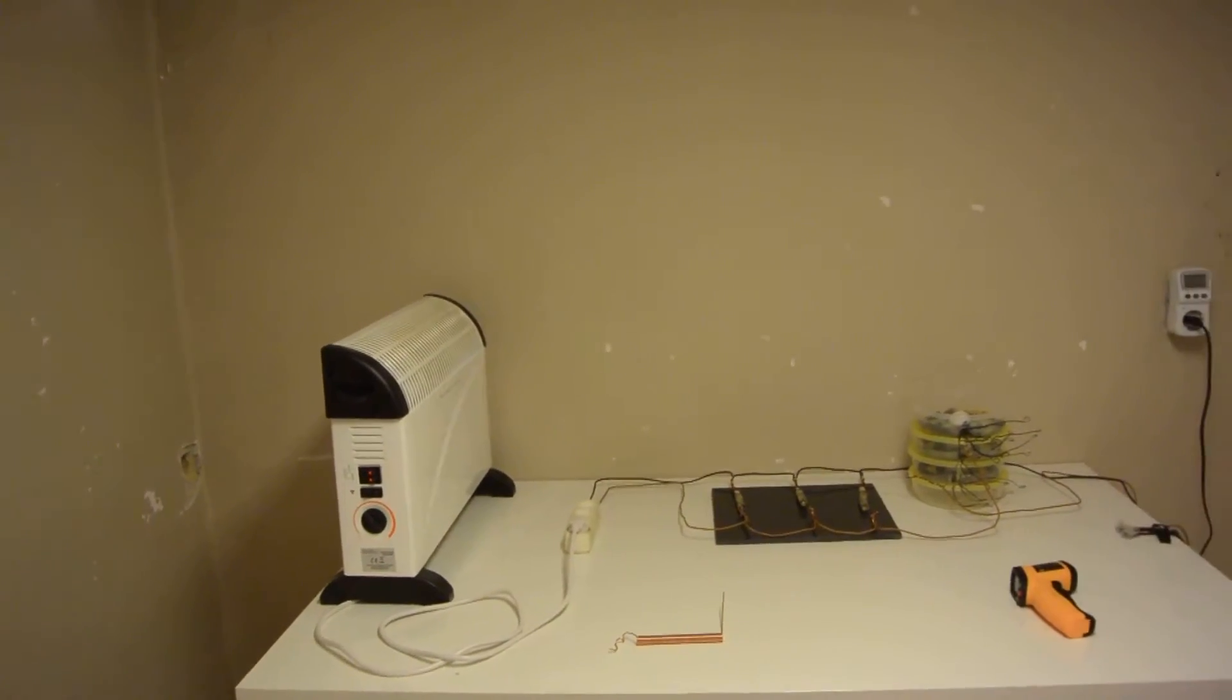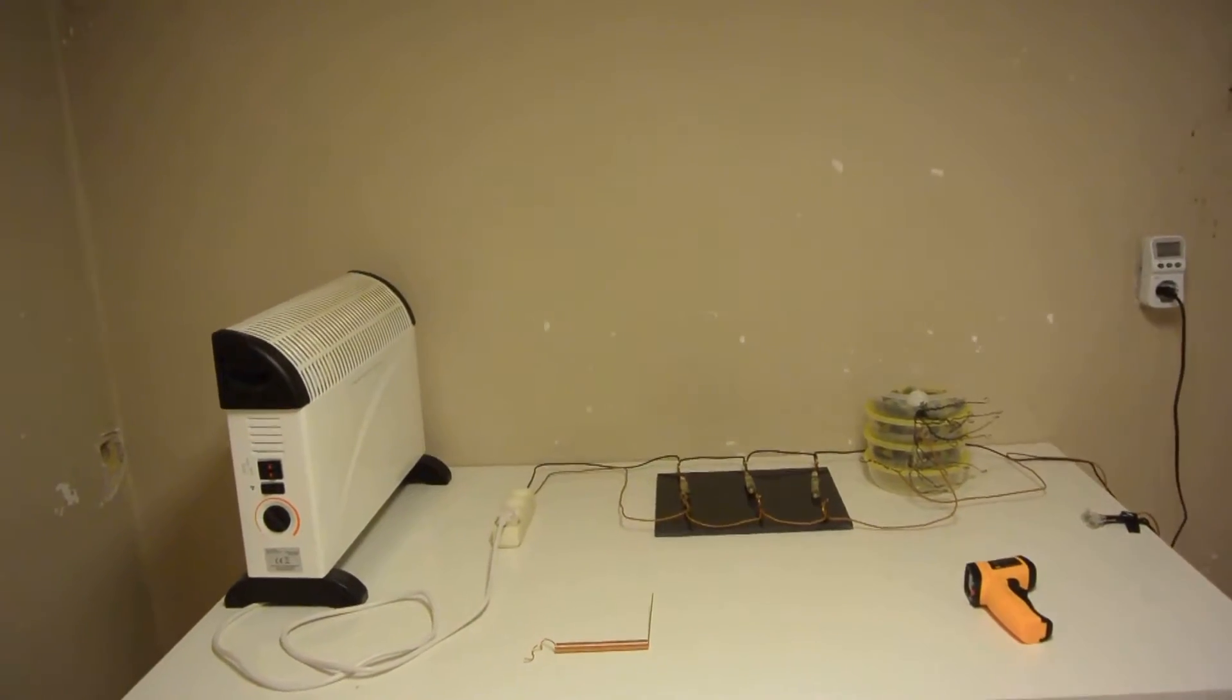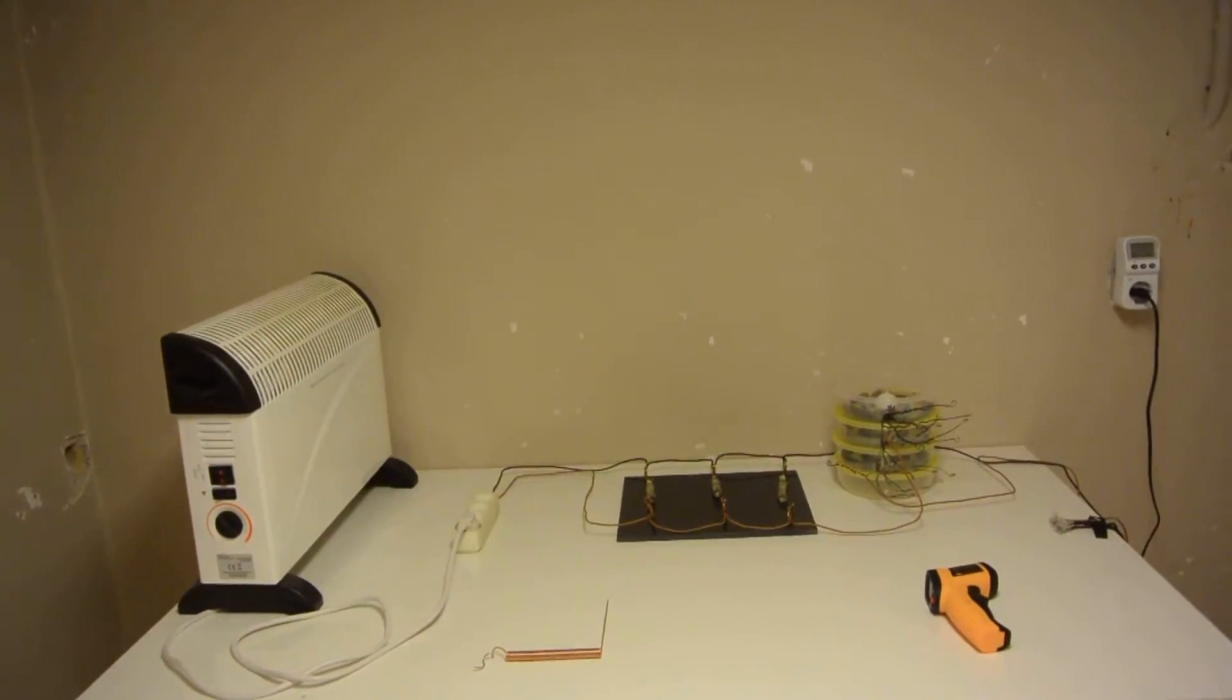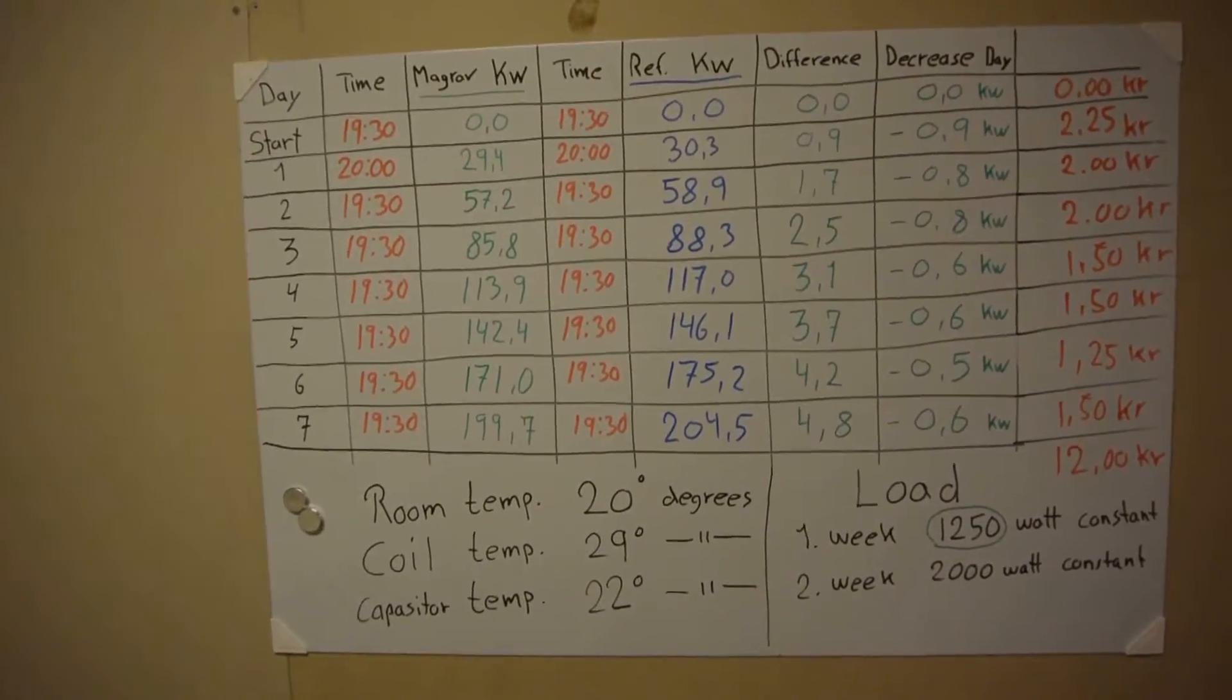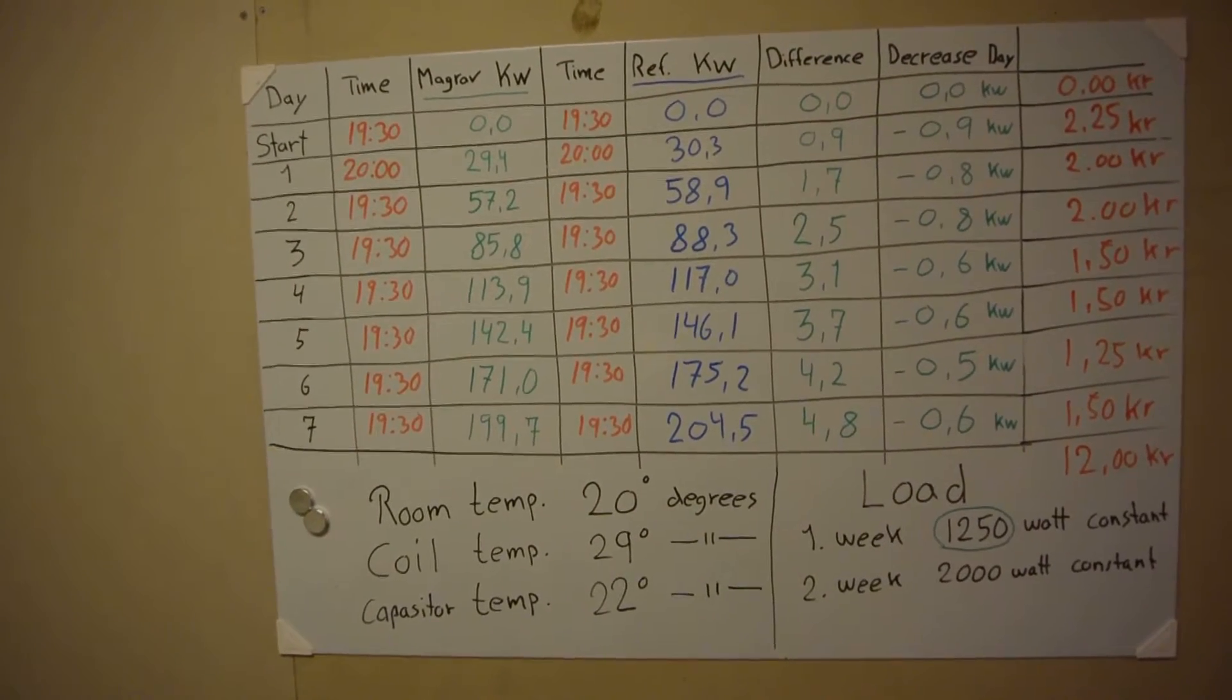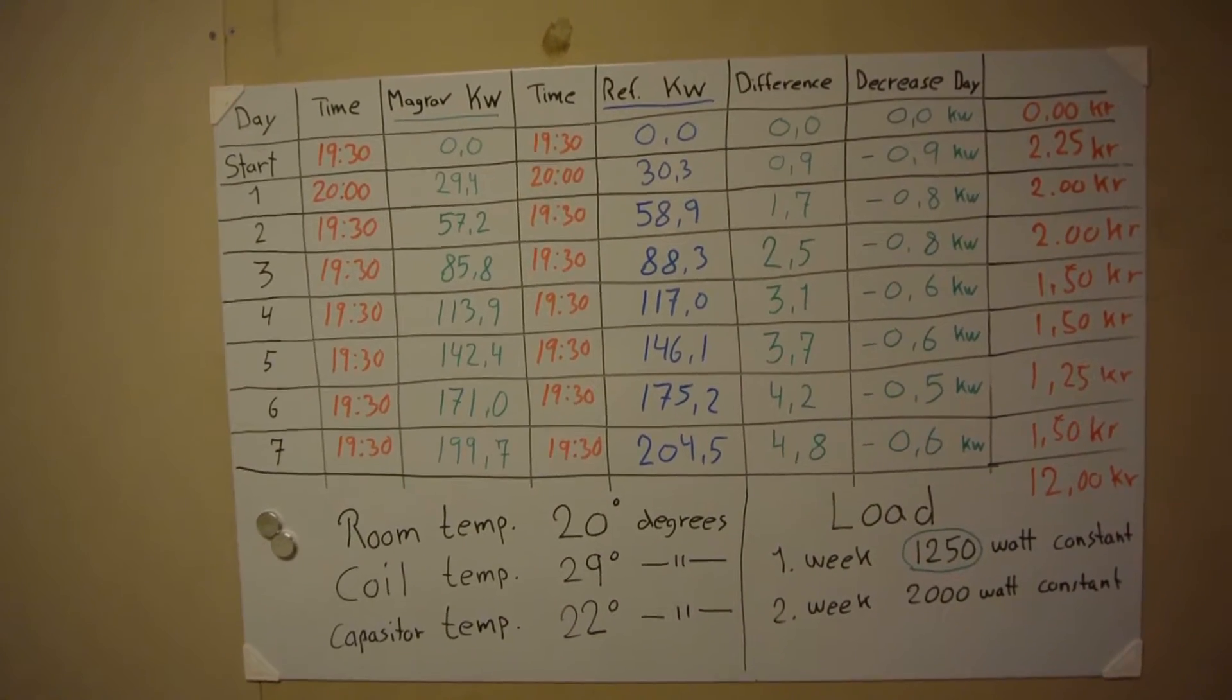And then I reset the counters and this morning I got a totally different count because now my MaGrav system uses more power than my wall outlet on my reference system. In 12 hours I have a difference of between two and three kilowatt hours.